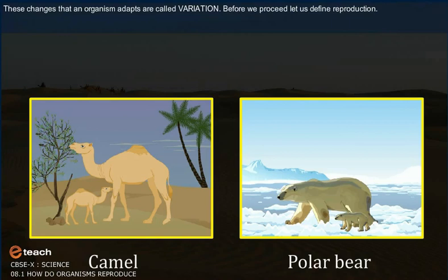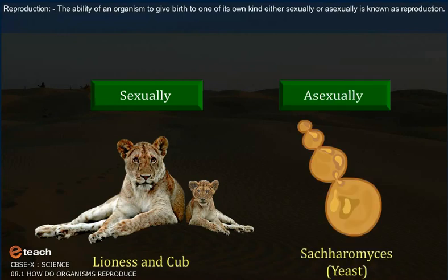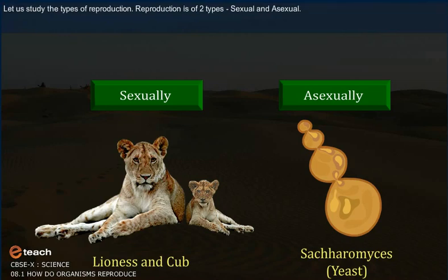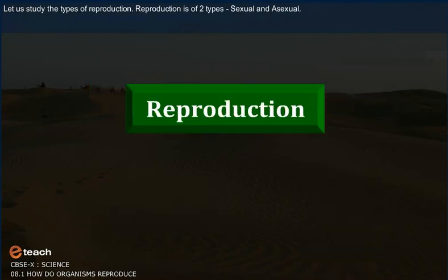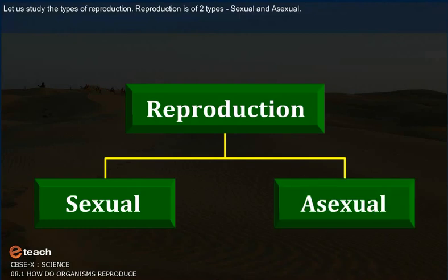Before we proceed, let us define reproduction. Reproduction is the ability of an organism to give birth to one of its own kind, either sexually or asexually. Reproduction is of two types: sexual and asexual.